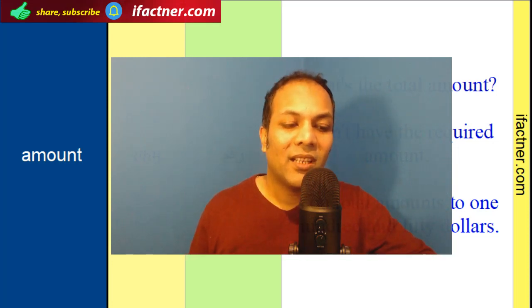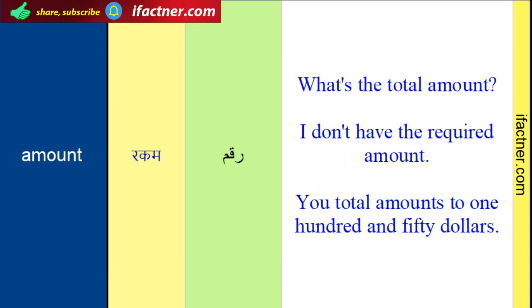Toh shurru karte hain apna aaj ka video tutorial. Amount ke spelling hotay hain: A M O U N T — amount. Iska meaning hota hai paise, rakam.